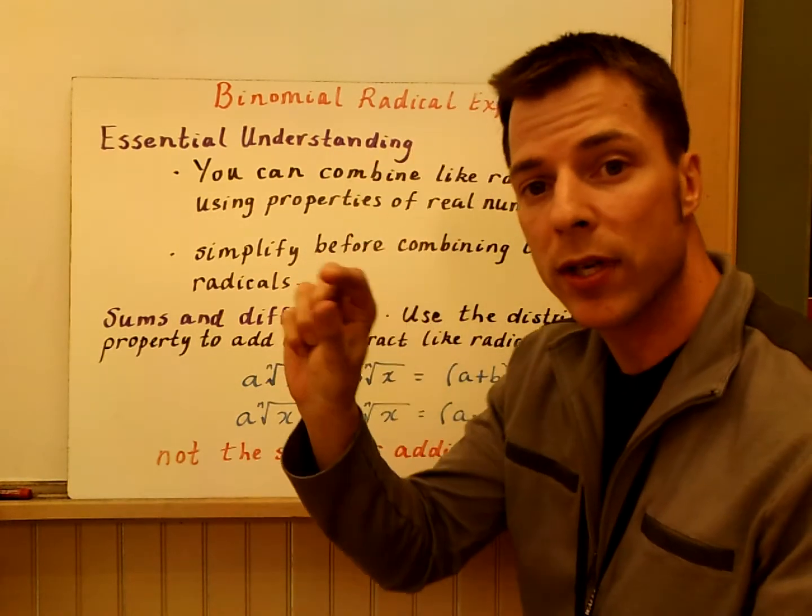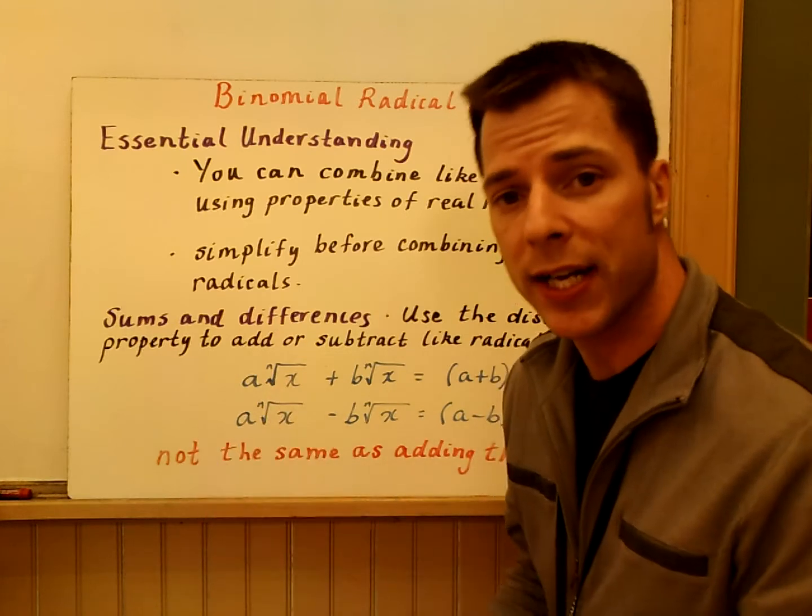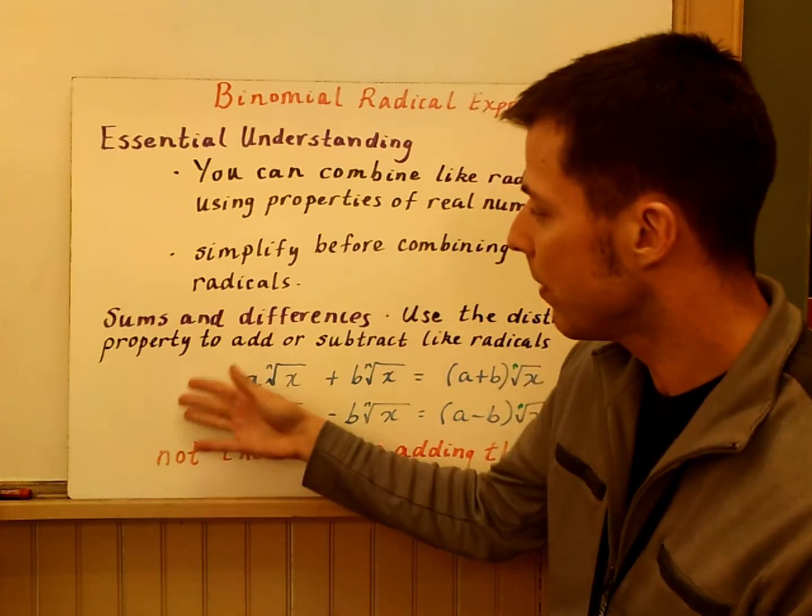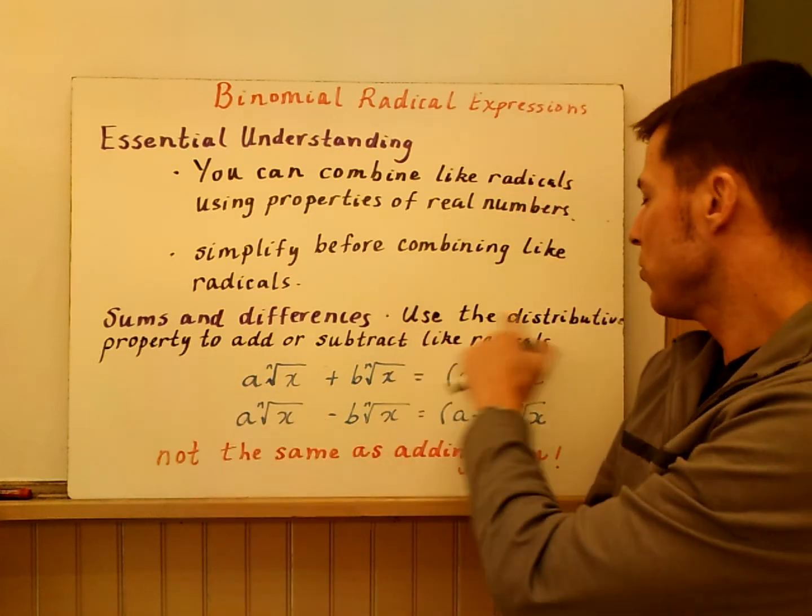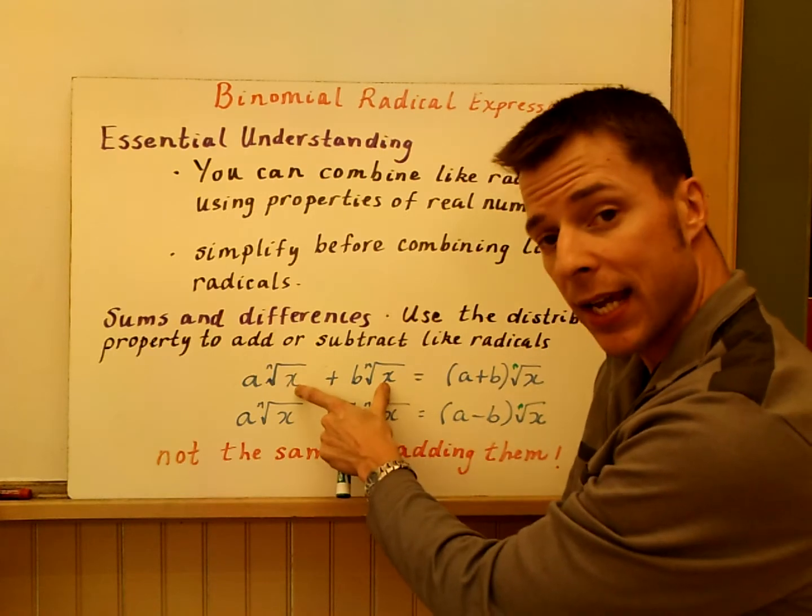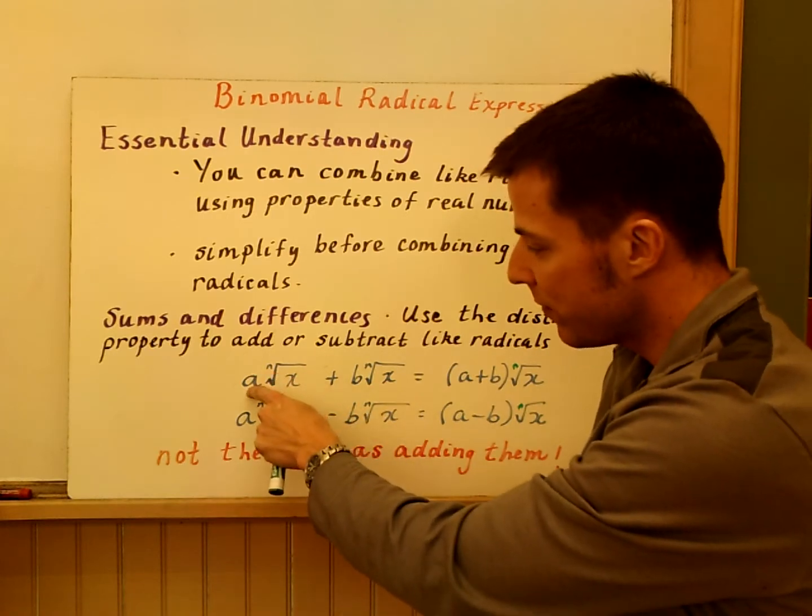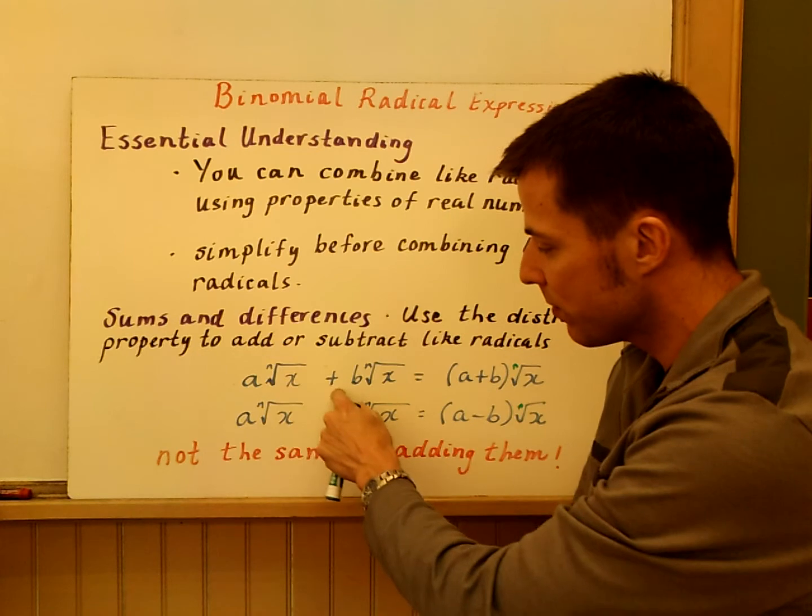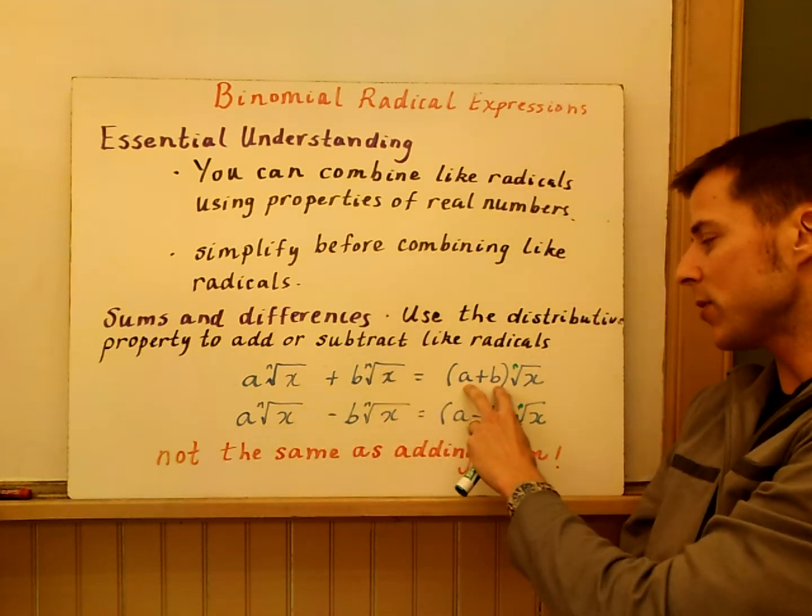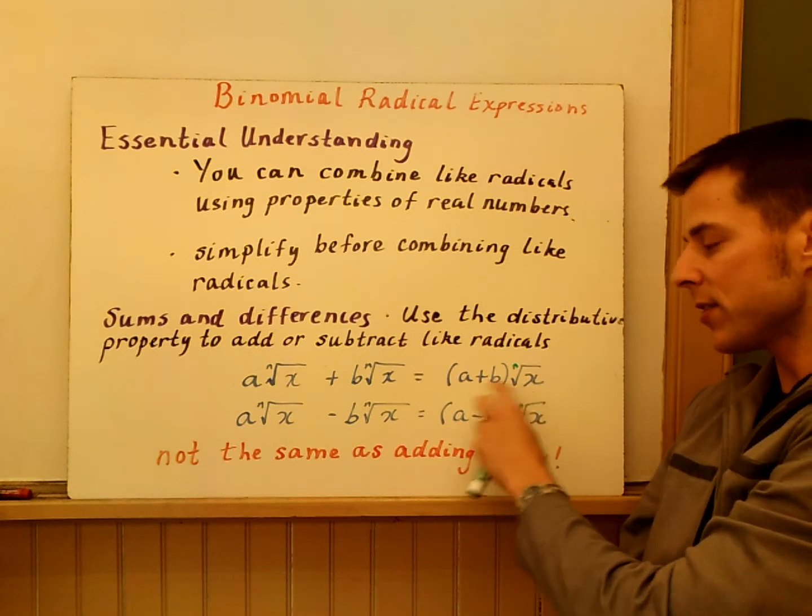Simplify before combining like radicals. Like the previous section, if you can break the radical down, simplify before you start combining them. A couple of properties here: to use the distributive property to add or subtract like radicals, they have to have the same radicand and the same index. If you have a times the nth root of x plus b times the nth root of x, you can combine those. You'd have a plus b times nth root of x.